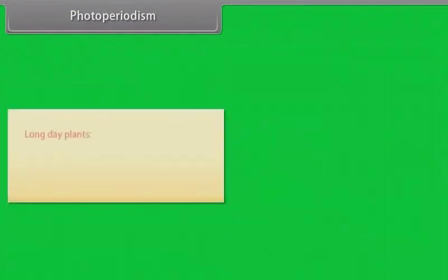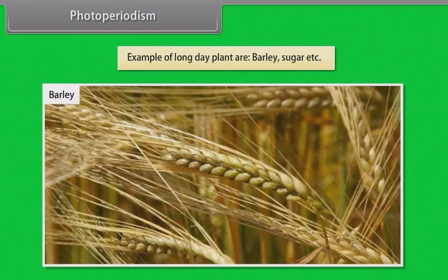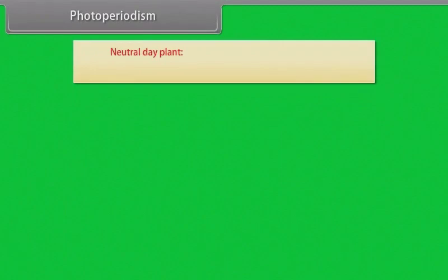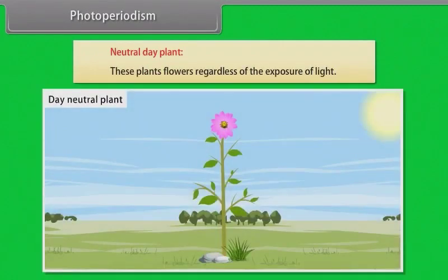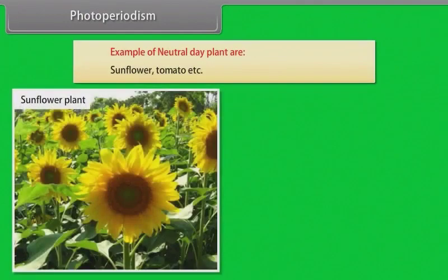Long day plants: These plants induce flowering when day length exceeds the critical day length. Examples of long day plants are barley, sugar beet, etc. Neutral day plants: These plants flower regardless of the exposure to light. Examples of neutral day plants are sunflower, tomato, etc.